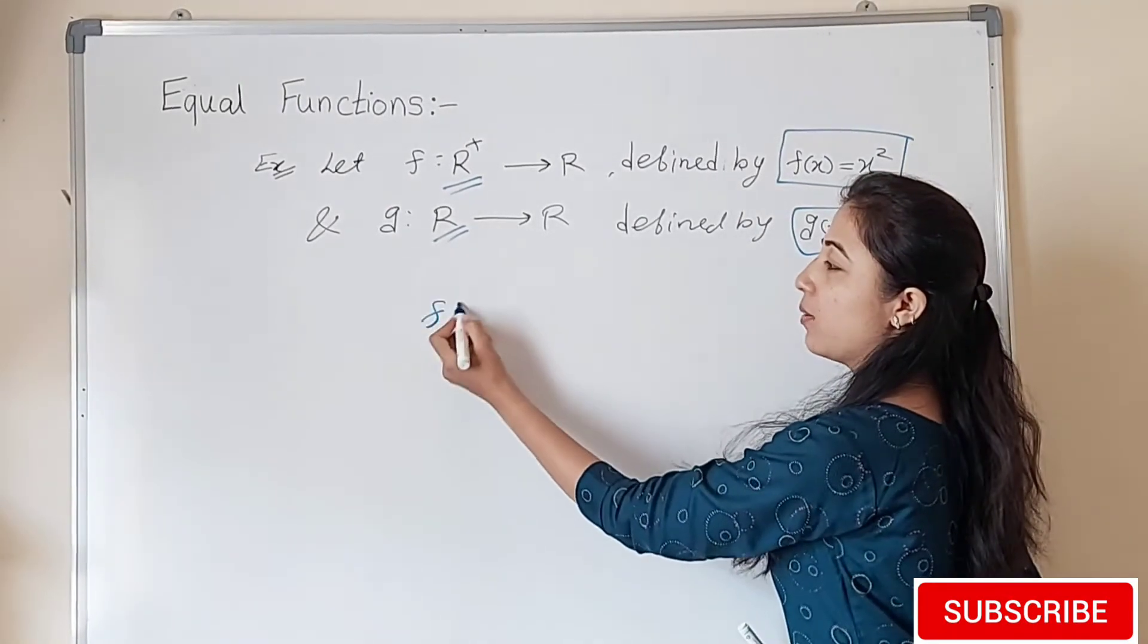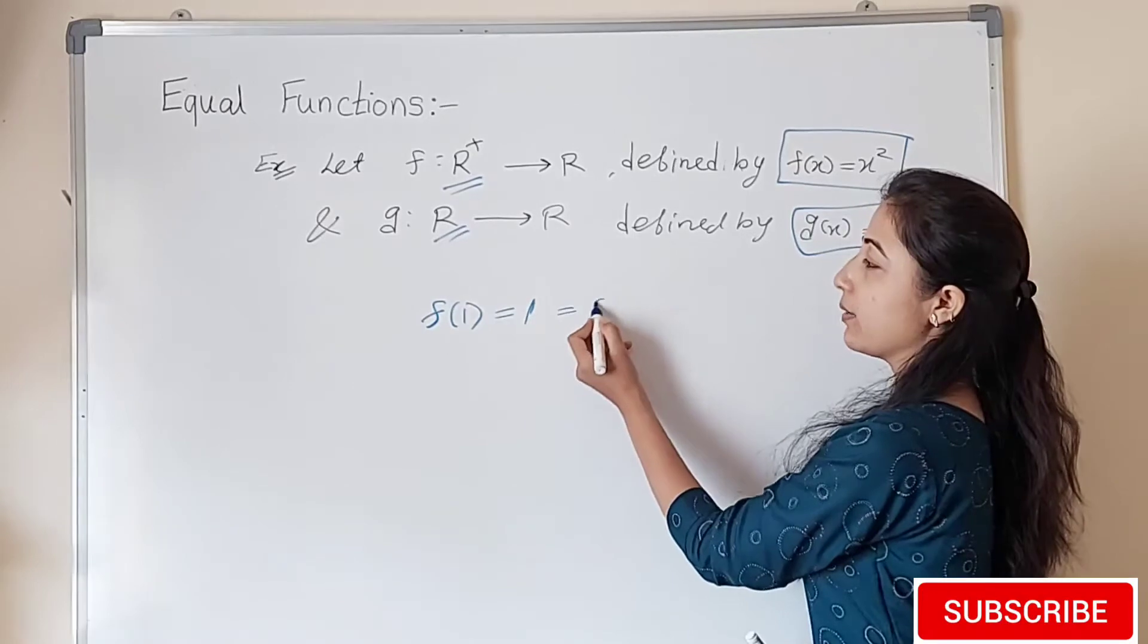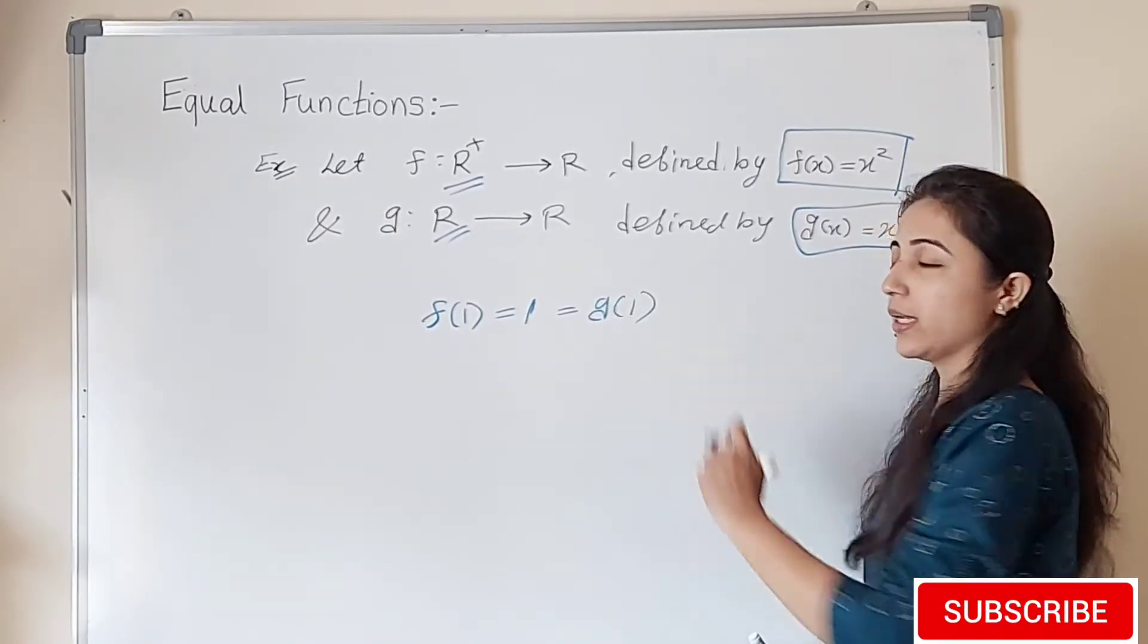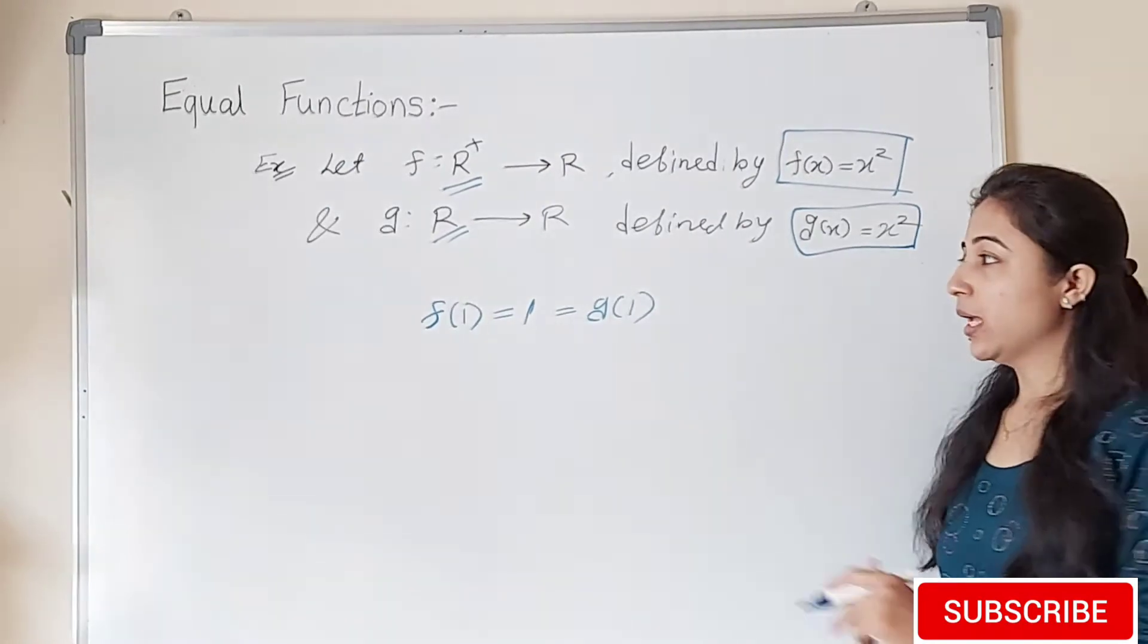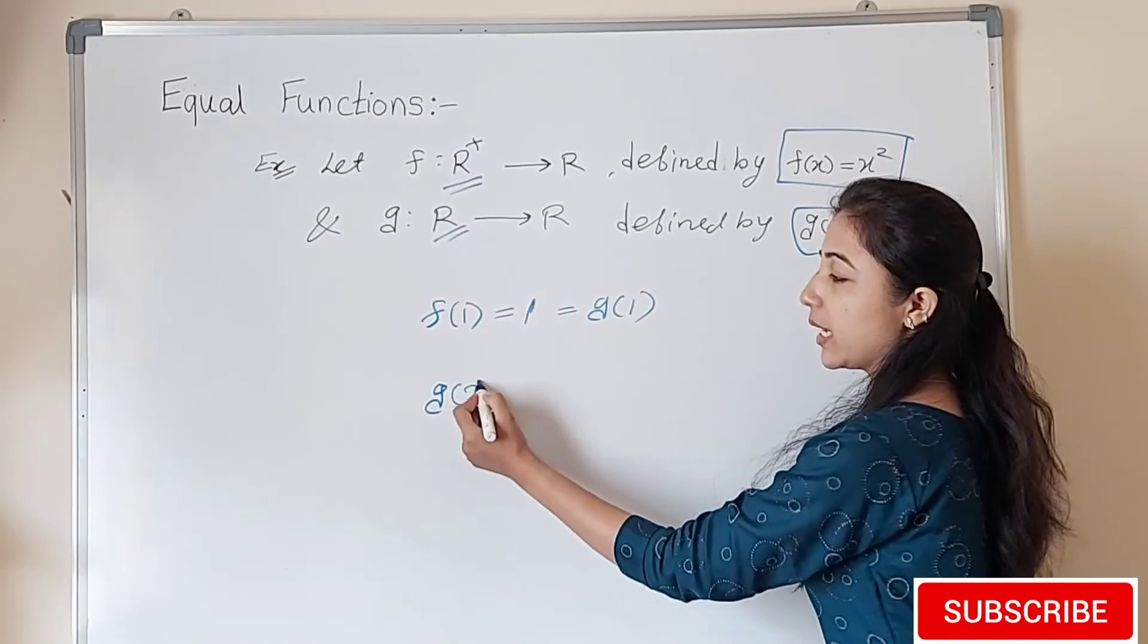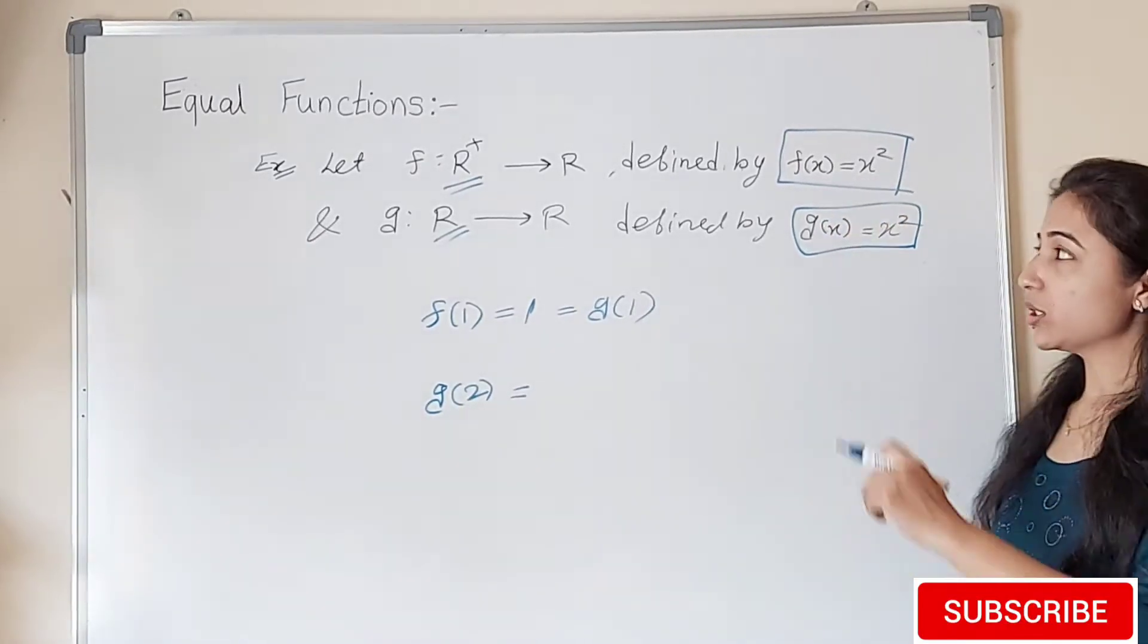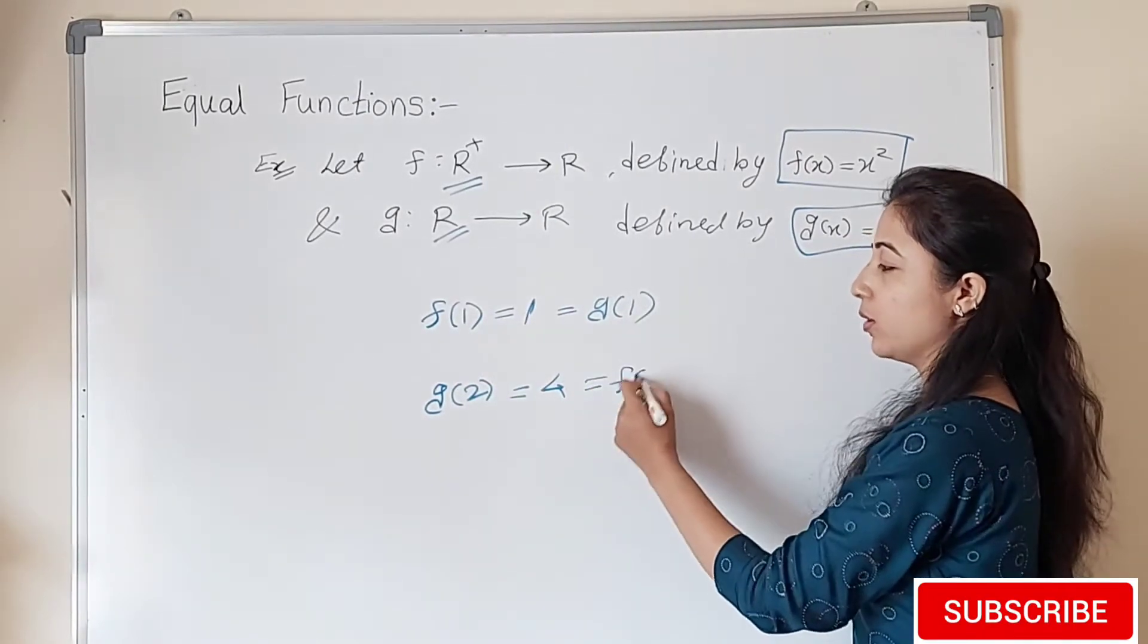If domain is different, so if we find the image of 1, f(1) equals 1, it is equal to image of 1 in function g. Using function g it is 1 squared equals 1, and f(1) is also 1. It is positive real number, so no problem.